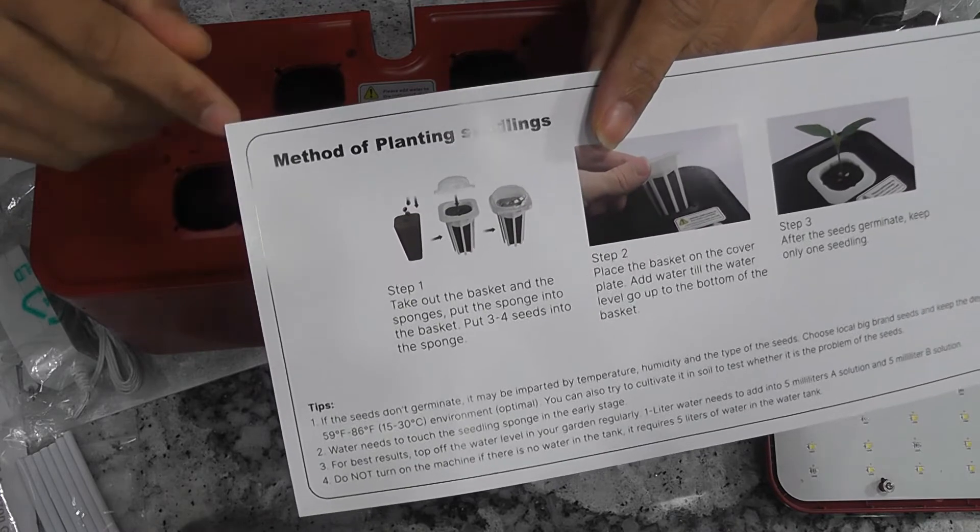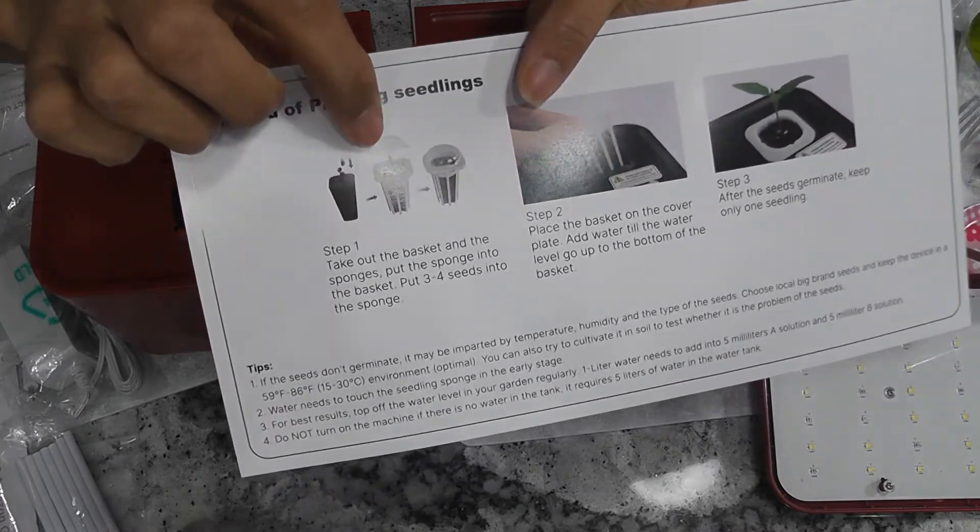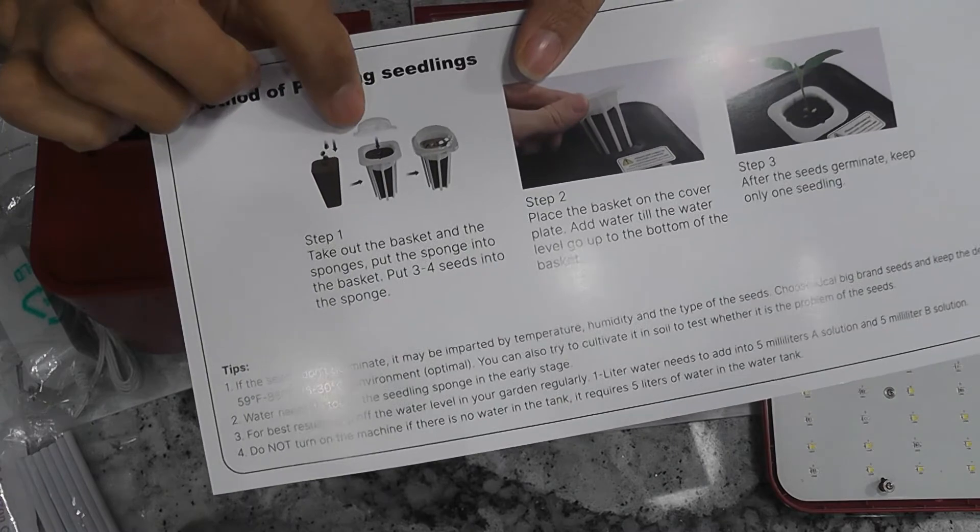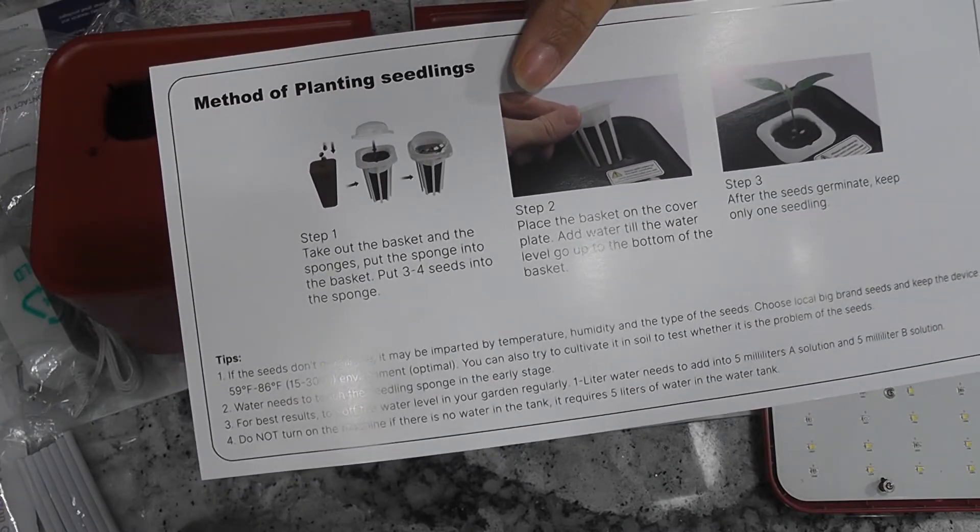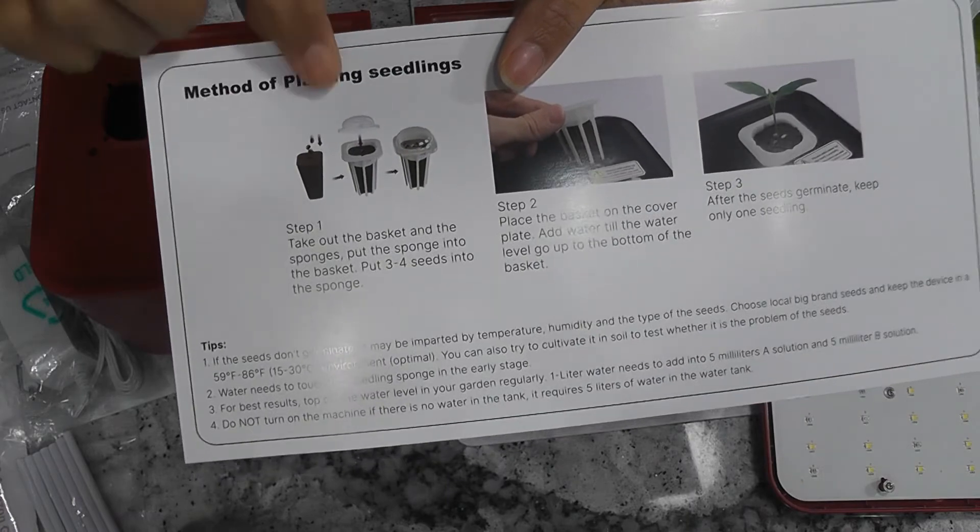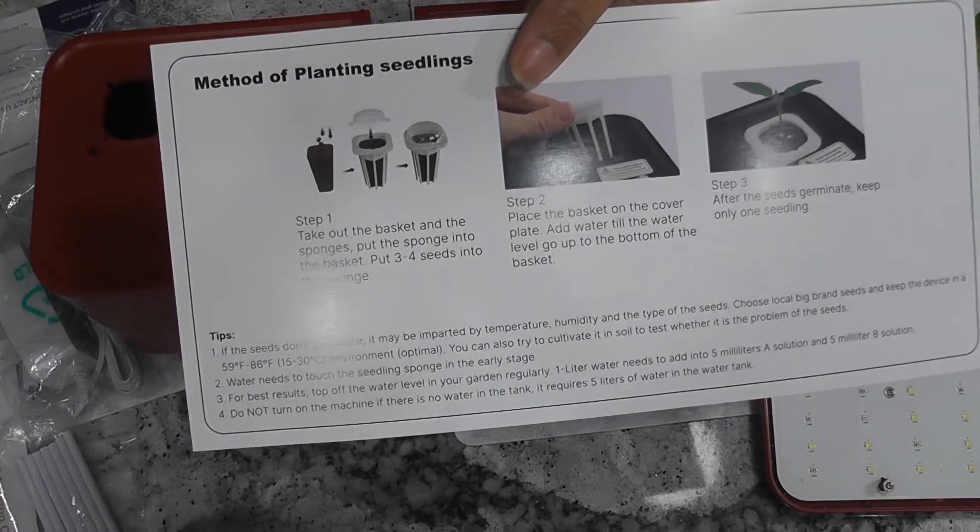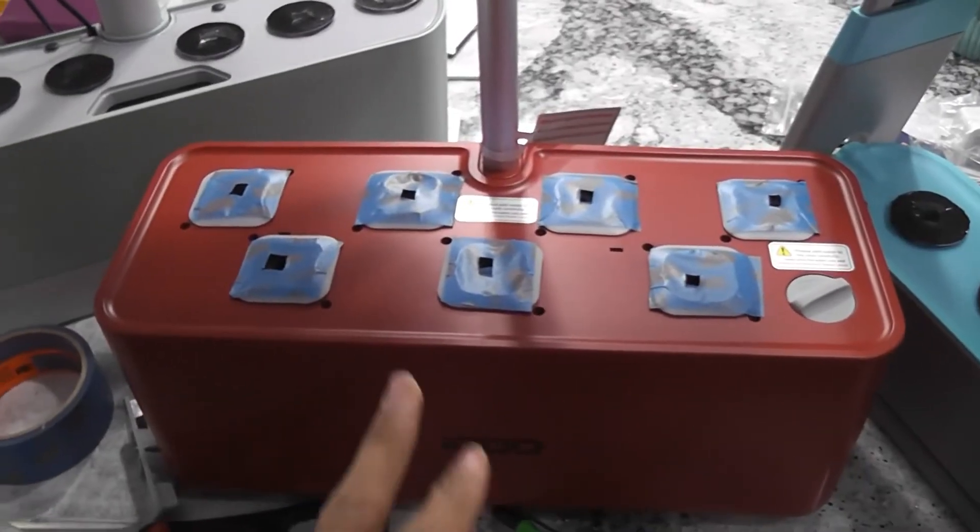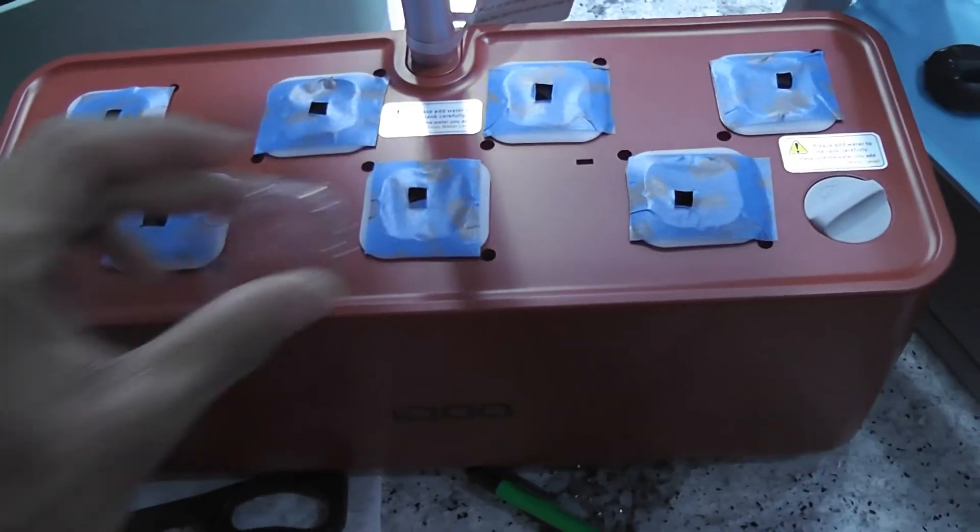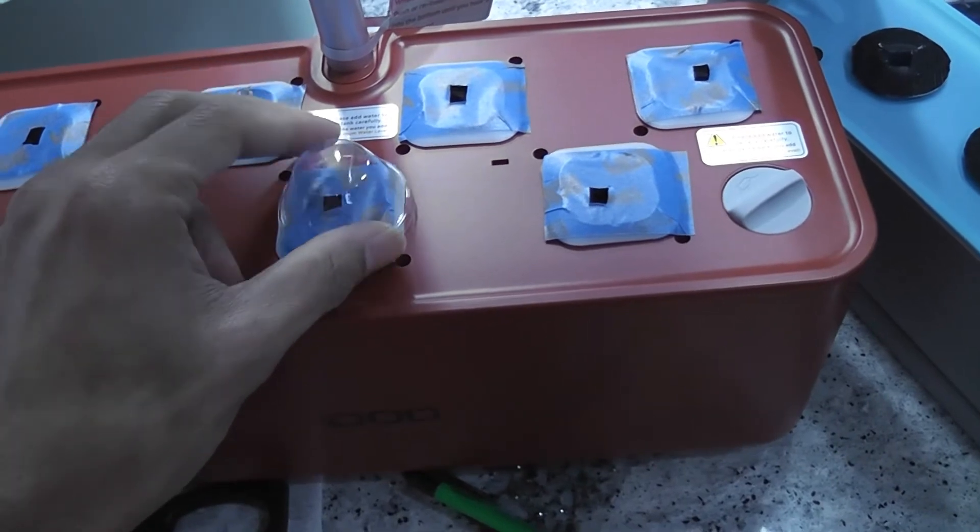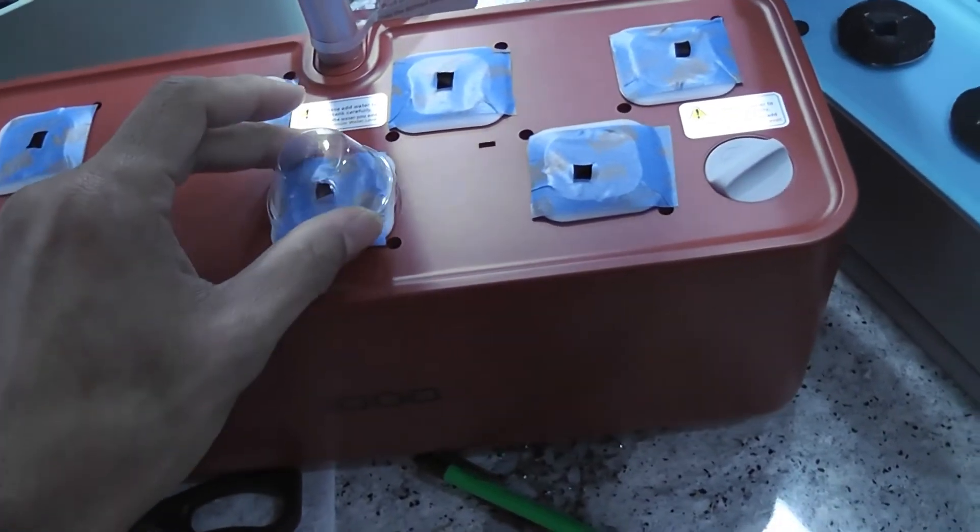I expected that it comes with domes to cover the pod. Domes help with germination by retaining the moisture. Domes didn't come in this box. Not sure if it is just my box that is missing the domes or they never provide the domes. I just put a tape to block the light and help germination. And then placed my AeroGarden dome. AeroGarden dome doesn't fit iDo pods very well, but let's see.